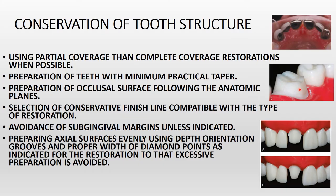You should also preserve the occlusal surface following the anatomic planes — however the anatomy of the tooth is, you have to follow that and prepare the occlusal surface accordingly. Next is selection of a conservative finish line compatible with the type of restoration, whether ceramic, metal, or metal-ceramic. Avoid subgingival margins unless indicated. Also prepare the axial surface evenly using depth orientation grooves and proper width of diamond points. These are the key points for conservation of tooth structure.